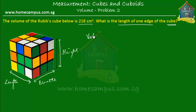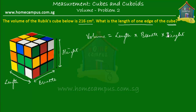We know that the volume of any cuboid — not cube, cuboid — is equal to the product of its length, its breadth, and its height. So the volume of a cuboid is length times breadth times height. Now, how does it change when we're talking about the volume of a cube?